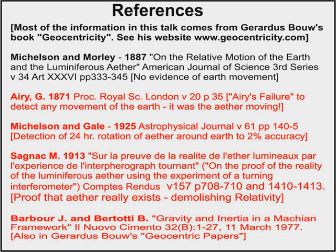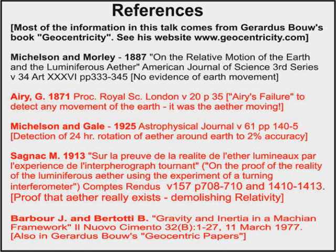But even more important is that a major scientific problem arises if the geocentric model is rejected, and this is that there are four experiments that all demonstrate that the Earth is stationary and at the centre of the universe. They are as follows.